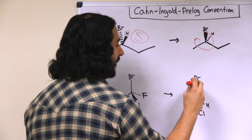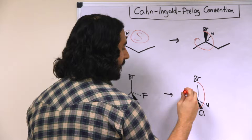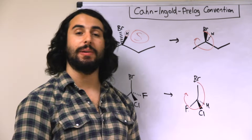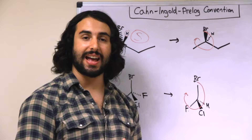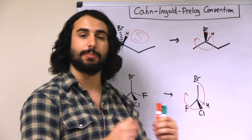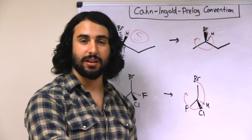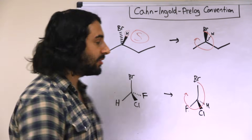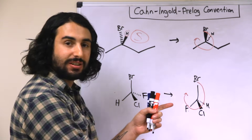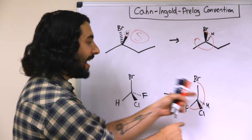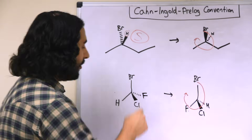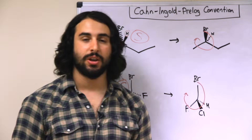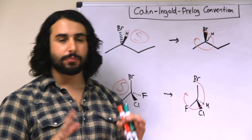That would be clockwise, so that appears to be R. However, once again, since we did this cheating swap we have to invert our answer. We made something that looks like R, which means the original must have been S.